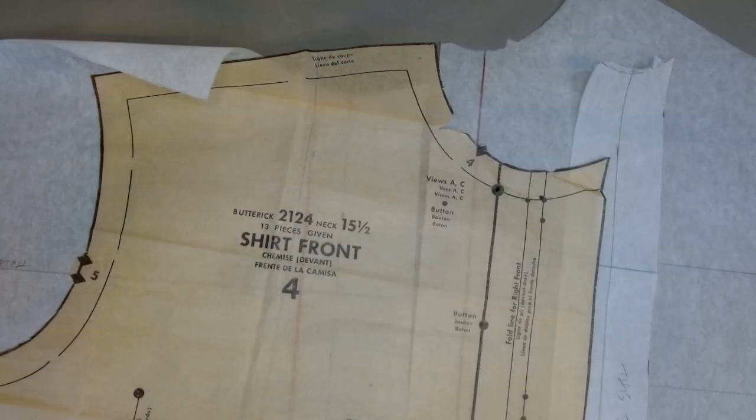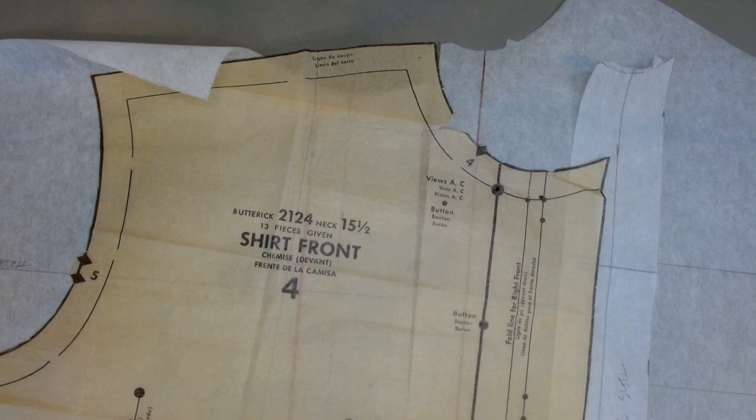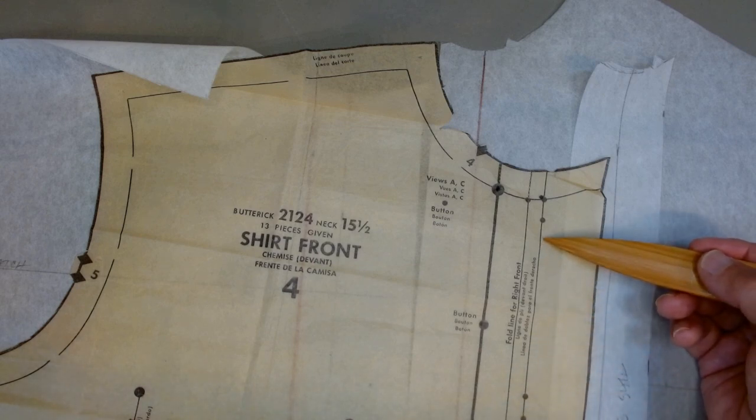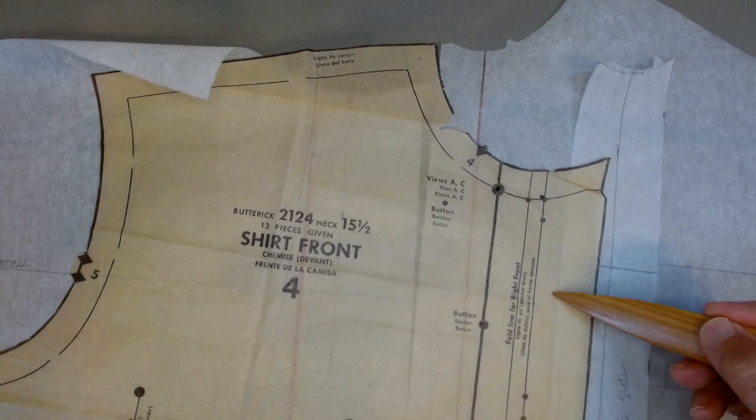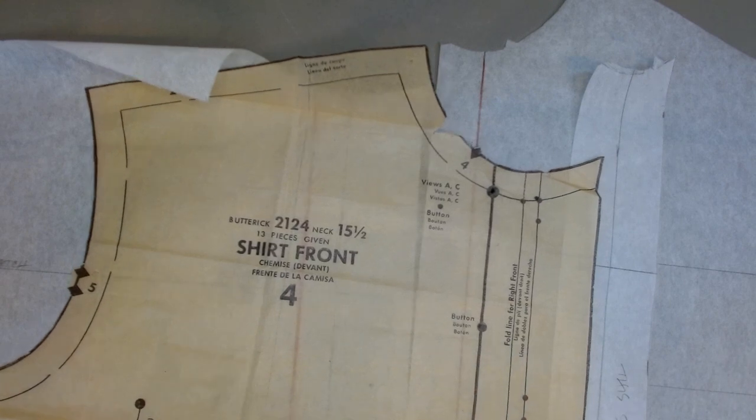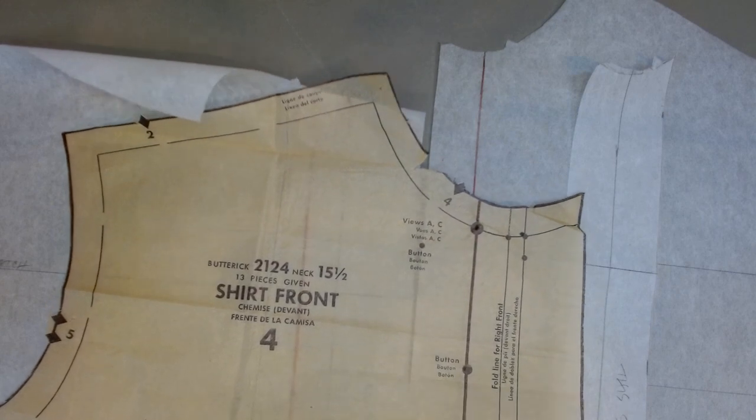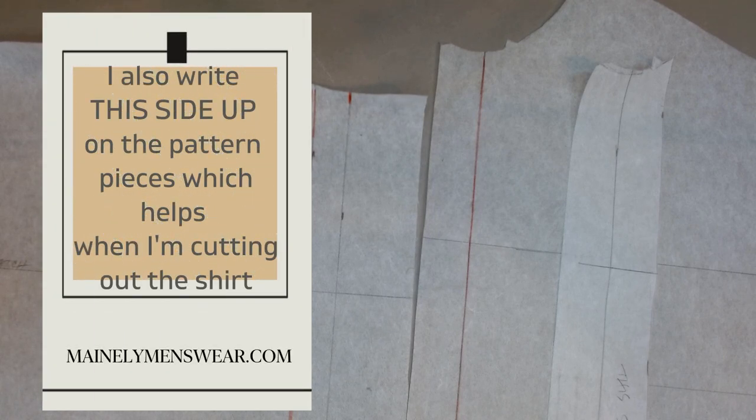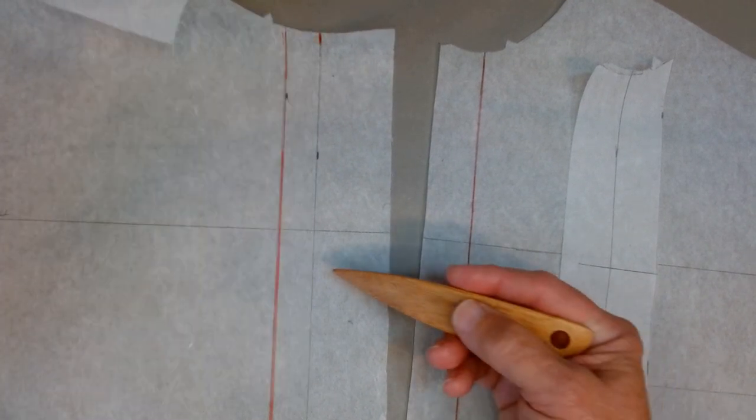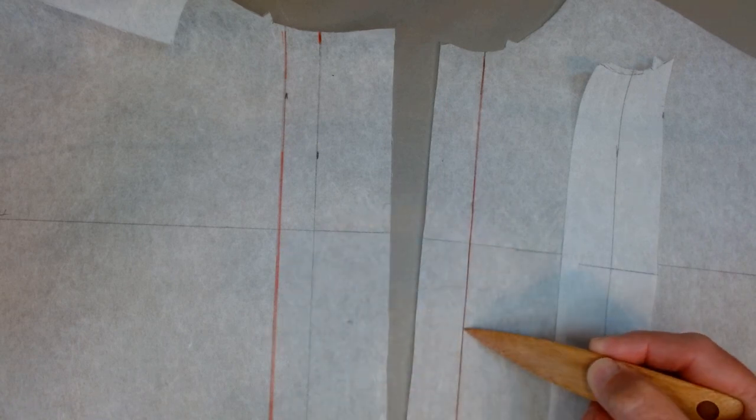The two fronts on a button-up shirt are frequently constructed in a different way, especially if you have a pattern that has a front band or button placket. On my vintage pattern here, I would have been instructed to cut this part of the pattern off for the left side, so the right and left side are very different patterns. These are the fronts for my shirt pattern, and I've marked here in red the center front of both the right side and the left side.